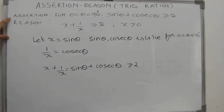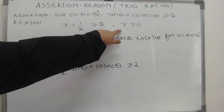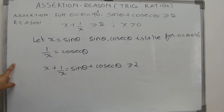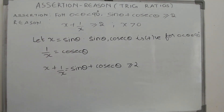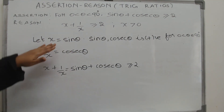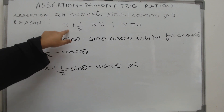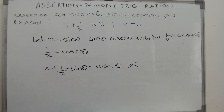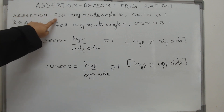Now we move to the assertion. We can substitute x equal to sine theta. Are we safe to do that? There is a condition: x must be greater than zero. That condition is satisfied because theta lies in the first quadrant, where both sine theta and cosine theta are positive. If x is sine theta, then one by x is cosine theta, and by the proven reason, sine theta plus cosine theta is greater than or equal to two.